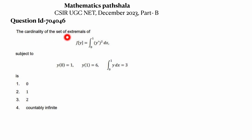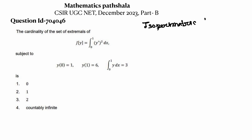The cardinality of the set of extremals of this integral subject to this boundary condition is what we have to find. Basically, we first have to find the extremal of the given integral subject to the given condition, then calculate how many extremals exist. This problem is called an isoperimetric problem.